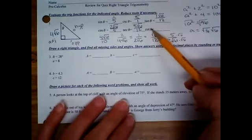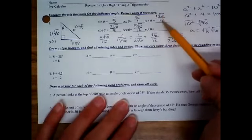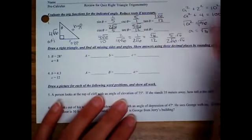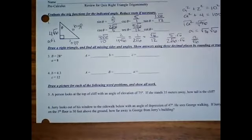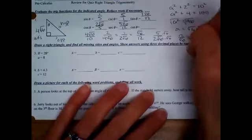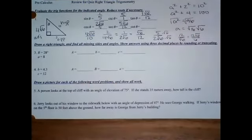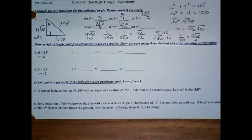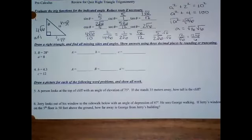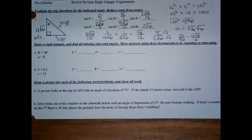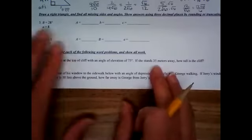And then cotangent, you're reciprocating tangent. So if you flip this, you would have 12 over √6. Which would give you 12√6 over 6. And then 12 divided by 6 is 2. So 2√6. Again, the hard part of these problems is not the trig. The trig is honestly the easy part. It's reducing all those roots. Just be careful. Remember that you have a calculator.